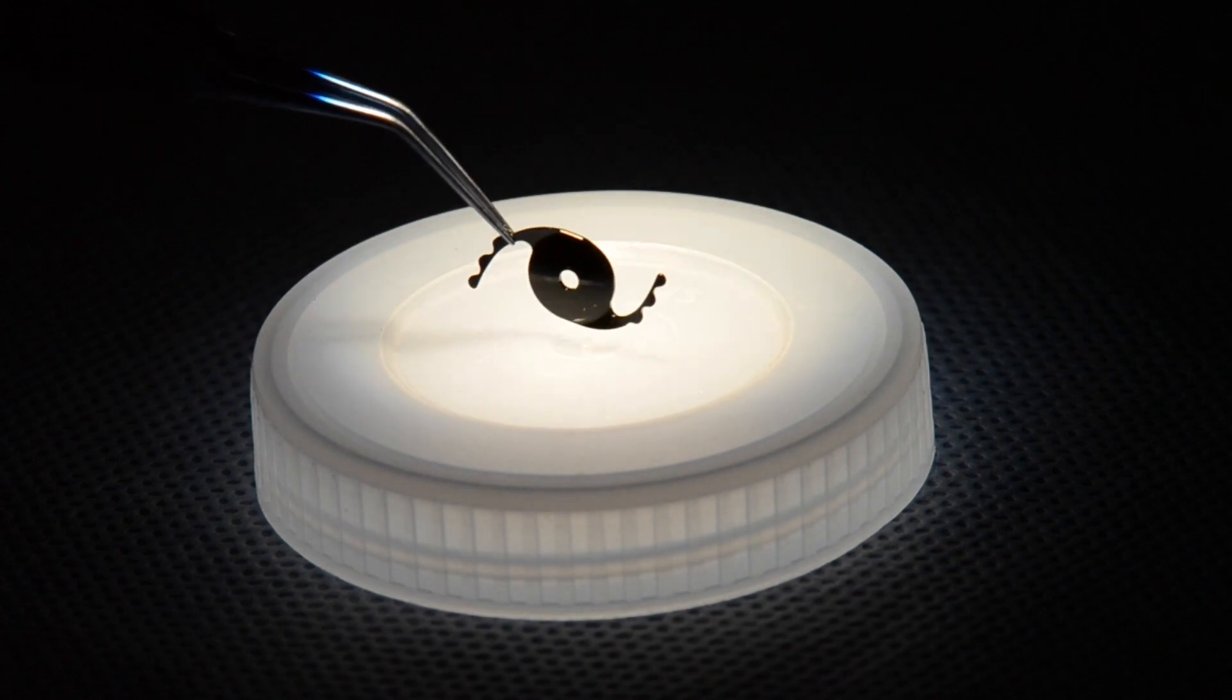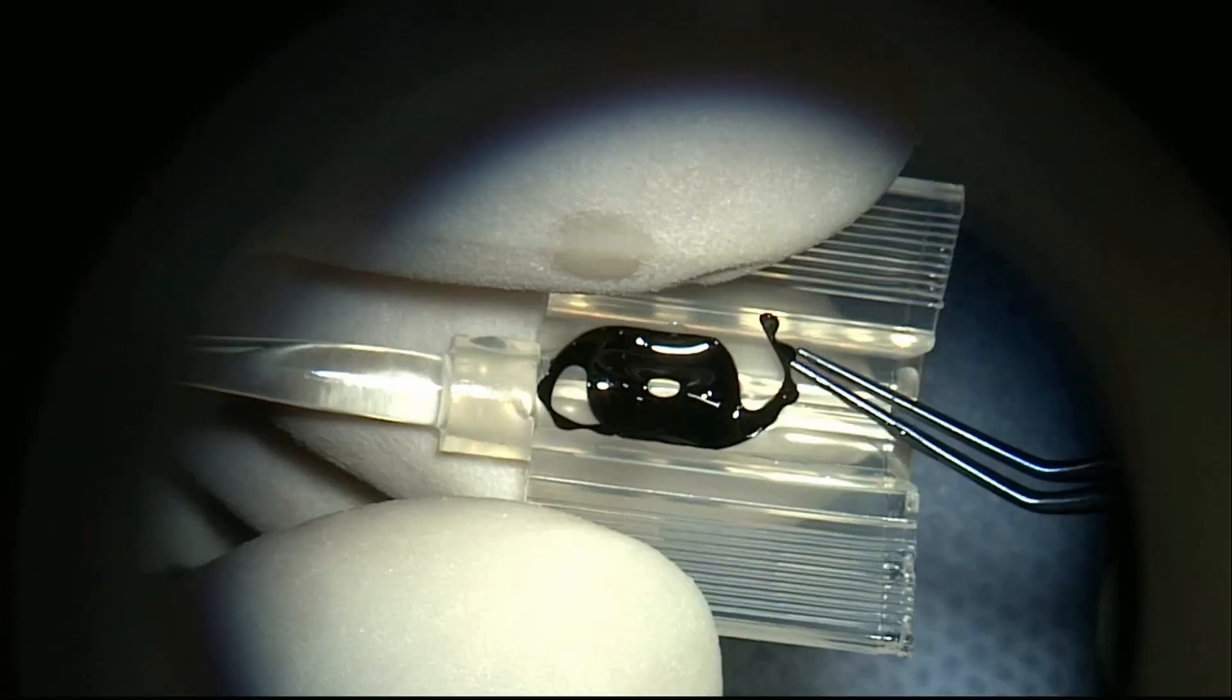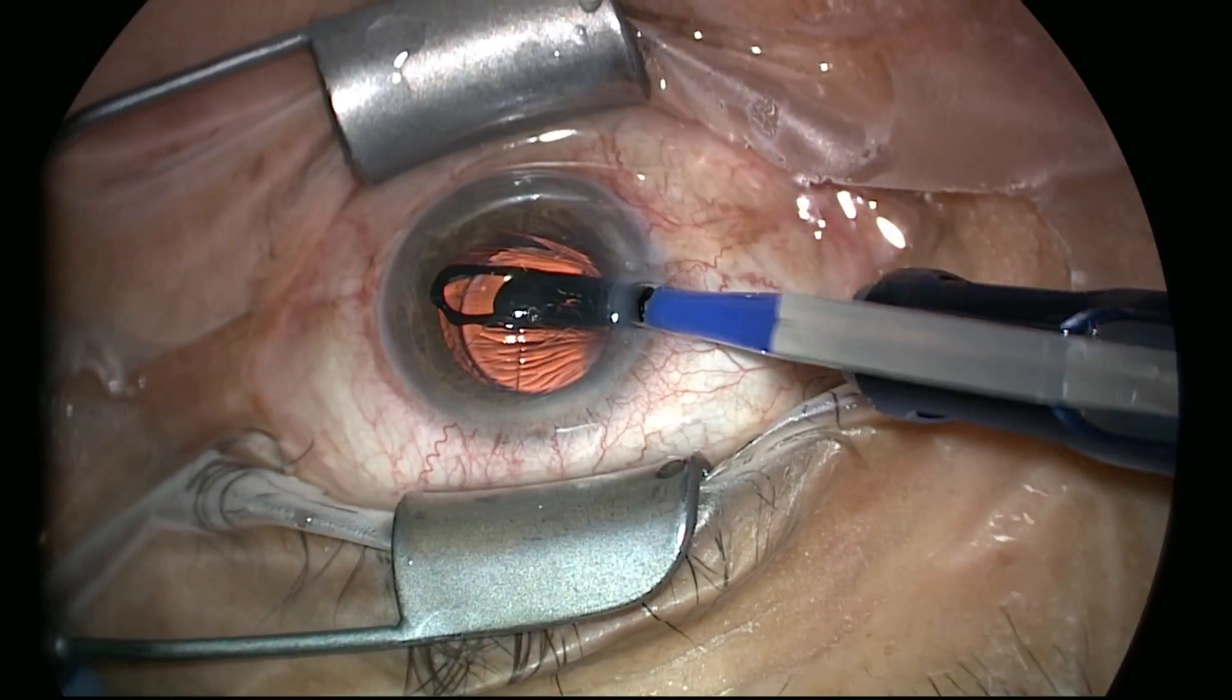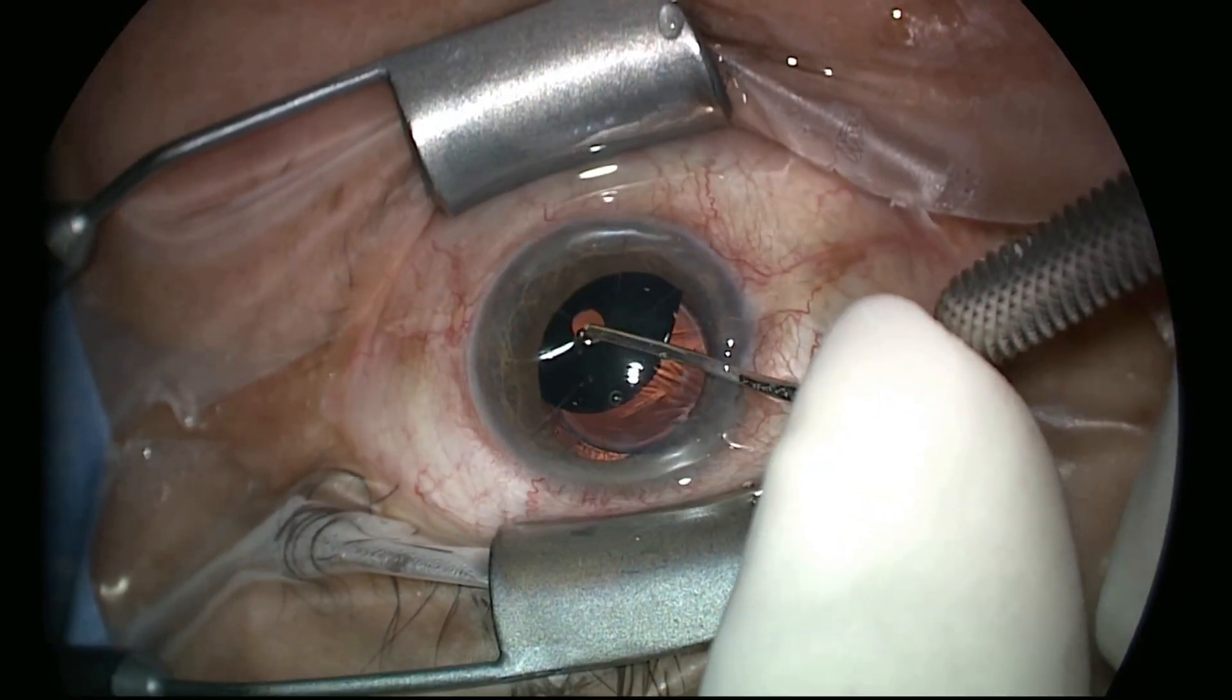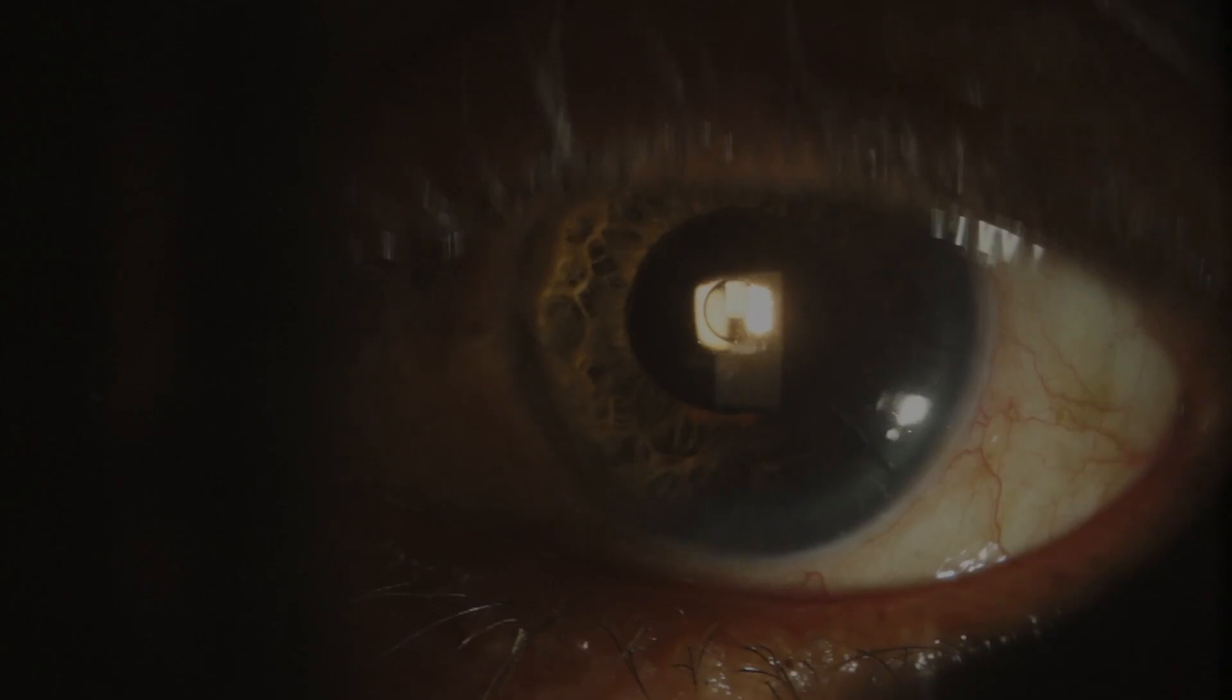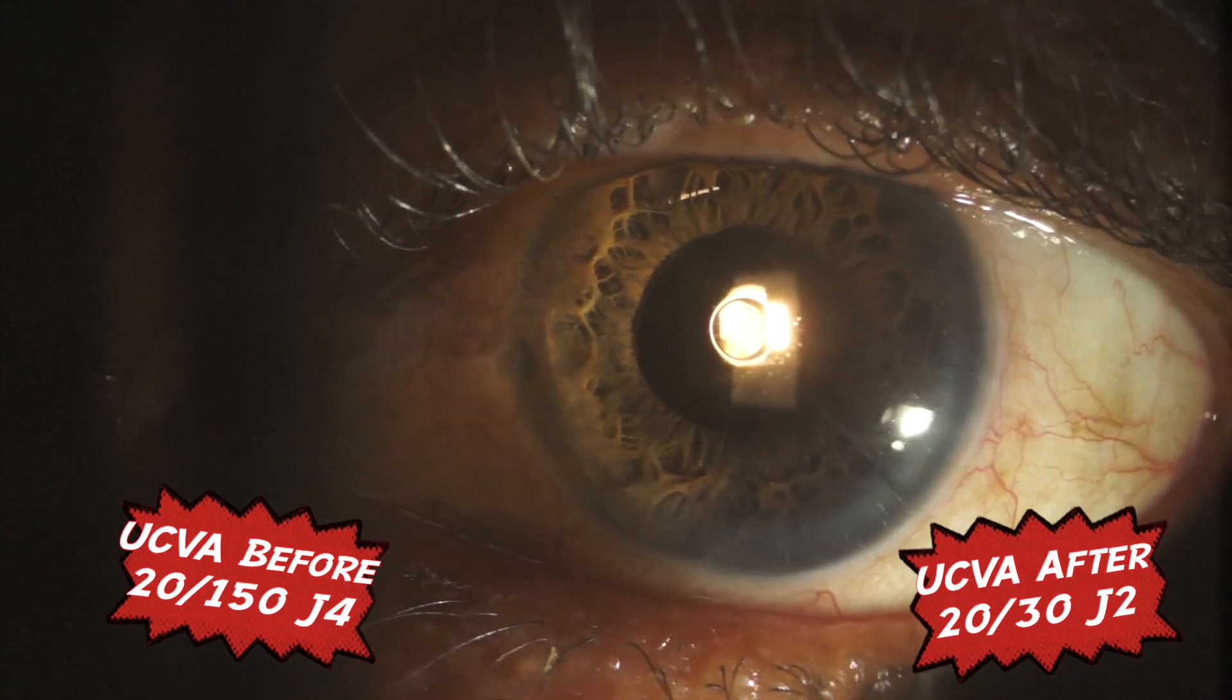We decided to address this problem with this simple, yet elegant solution. The device is implanted through a single 2.2 mm corneal incision and is directed to the ciliary sulcus. This is the eye the day after, with excellent centration and great improvement in visual acuity.